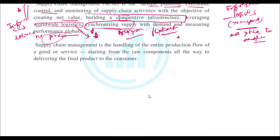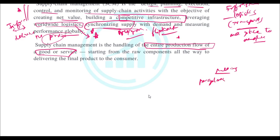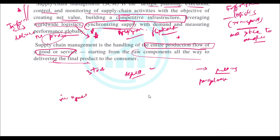Supply chain management is the handling of the entire production flow of a good or service. Once you understand the concept, you can paraphrase the definition in whatever way you need. We've seen three to four definitions of supply chain management, but once you've understood the concept you can clearly answer any question on it. It covers everything from raw components all the way to delivering the final product.